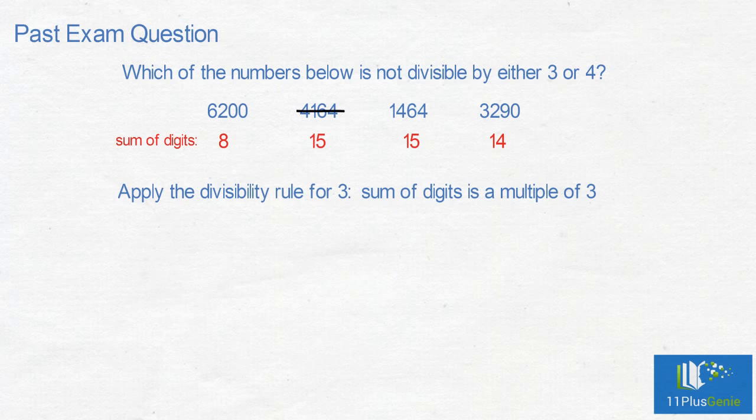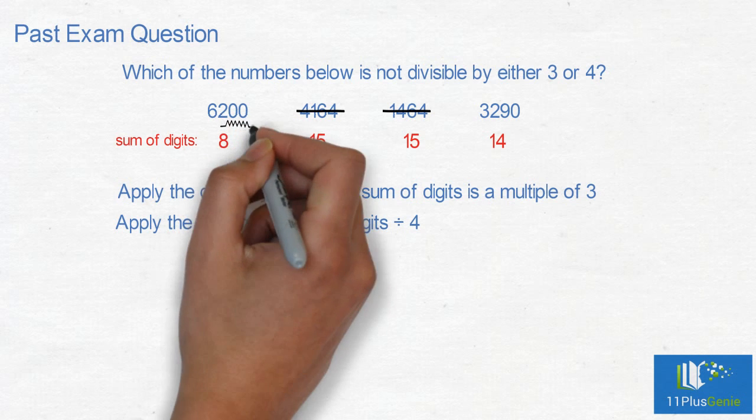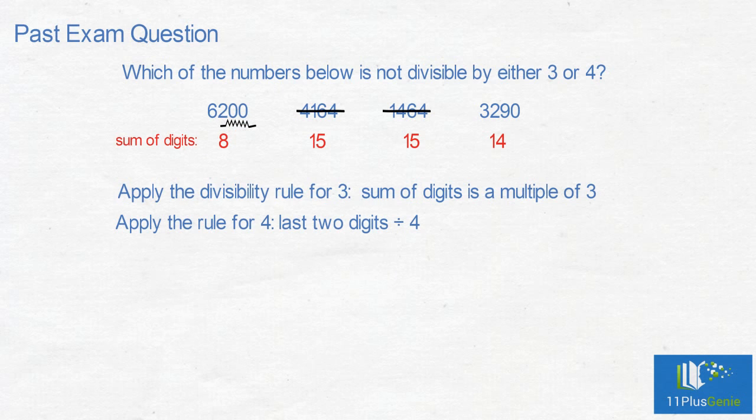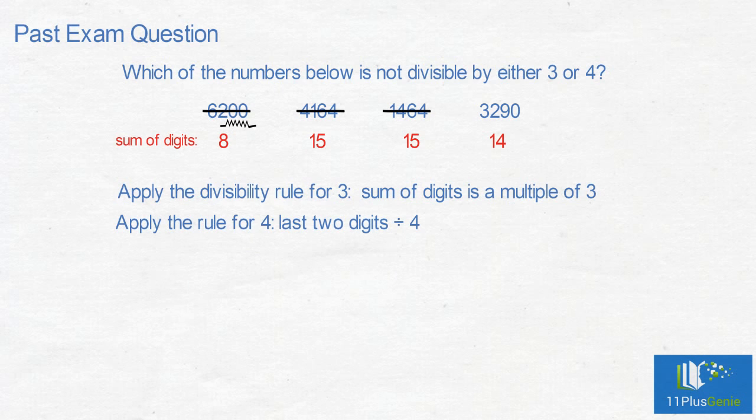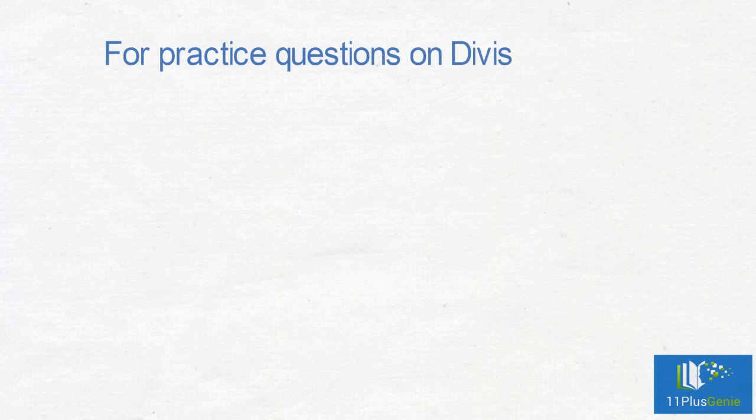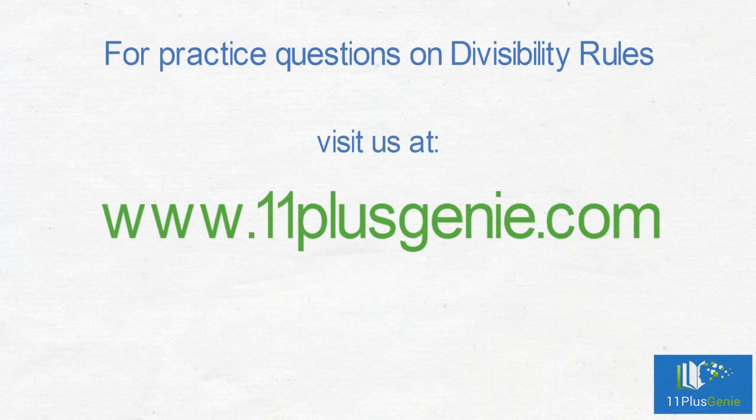Apply the rule for 4: last 2 digits divide by 4. 0 divided by 4 equals 0, so eliminate 6,200. Correct answer is 3,290. For practice questions on divisibility rules, visit us at www.11plusgenie.com.